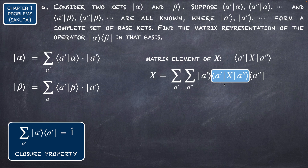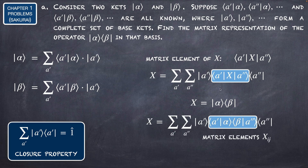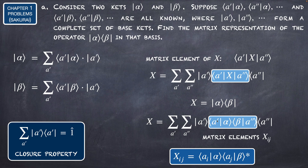This term is called the matrix element of X. Now considering the operator |alpha⟩⟨beta|, we make X equal to |alpha⟩⟨beta|. Then instead of that term we get ⟨a-prime|alpha⟩⟨beta|a-two-prime⟩, and this product of two coefficients gives the matrix elements X_ij. We use the notation i,j to represent the rows and columns of matrix X. So X_ij uses a_i instead of a-prime and a_j instead of a-two-prime, writing ⟨a_j|beta⟩ as beta_{a_j} conjugate.